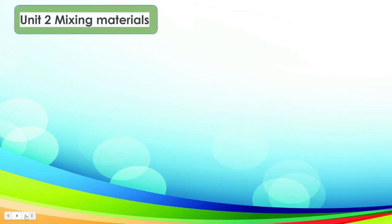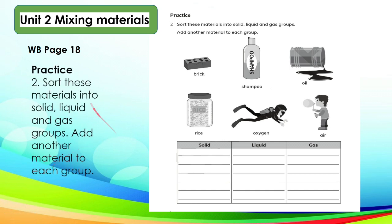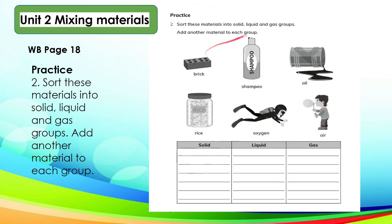Workbook page 18 is an application of what you have learned about sorting materials. When we sort, we group or classify objects together with similar properties. Now let's practice. These questions help you to become more confident in using what you have learned. We will sort these materials into solid, liquid, and gas groups, and then add another material to each group.